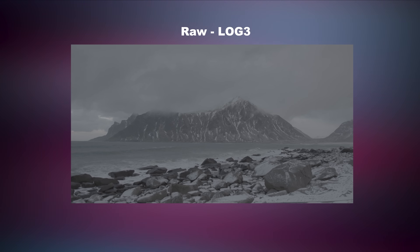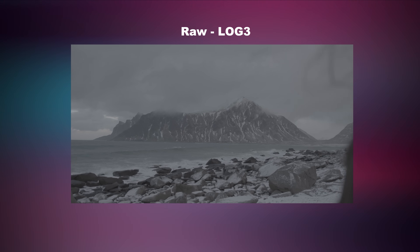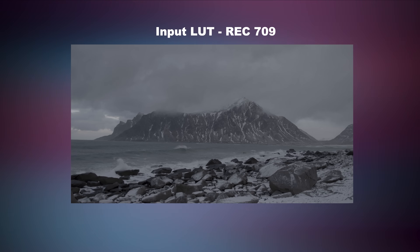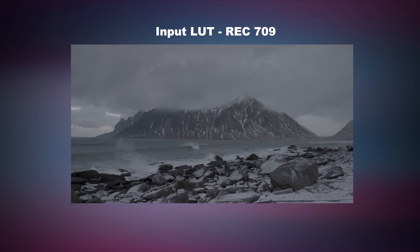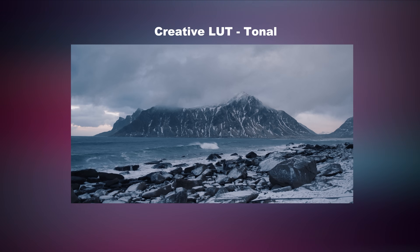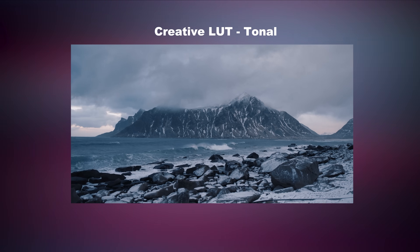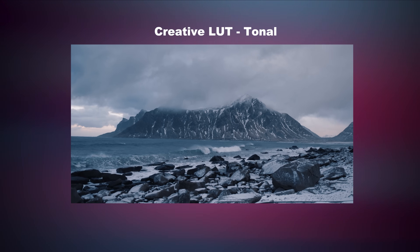So first, let's talk about what LUTs are. A LUT is basically a file that contains predefined color values, enabling you to change the color and appearance of your footage with a single click. It basically acts as a translator, converting the input color values of your footage into a desired output color value — hence the name lookup table.